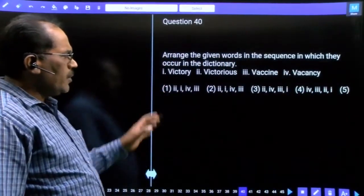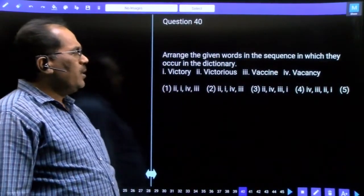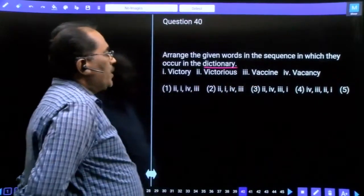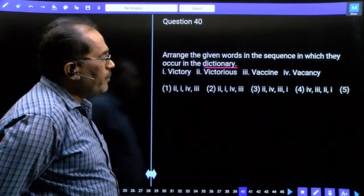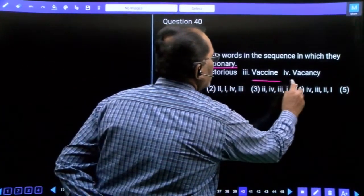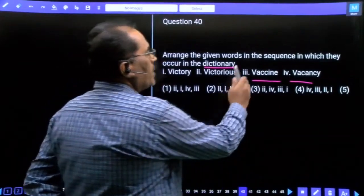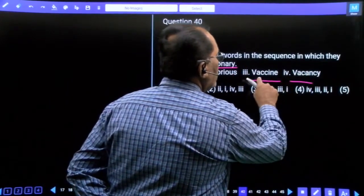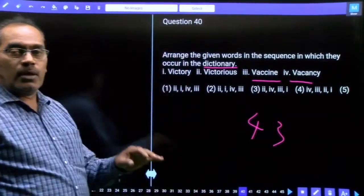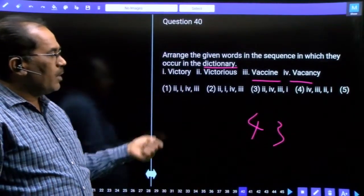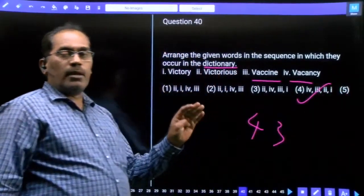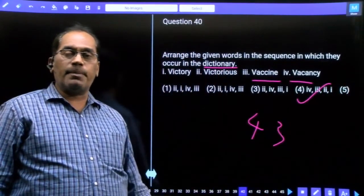Question 40, arrange the given words in dictionary order. The words are Victory, Victorious, Version, and Vacancy. First, we check the letters: VACC, VACA. The answer is fourth option. Using elimination, no need to check remaining options.